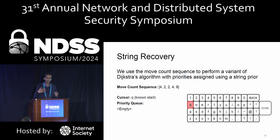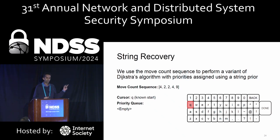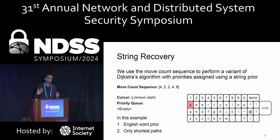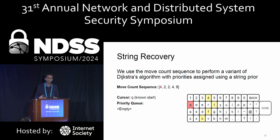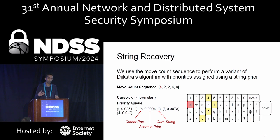The goal of the string recovery phase is to find the likeliest strings typed by the user matching this interaction sequence. We pose the problem as a graph search on the keyboard layout using a variant of Dijkstra's algorithm. For example, with a move count sequence from typing the English word 'test', the search anchors at the known starting point — the cursor on the key Q — and looks at the first number of moves, which is four. This gives a candidate set for where the user could now be, added to the search queue and scored by the frequency of English words prefixed by each of these characters, where characters like the digit four can be pruned away.